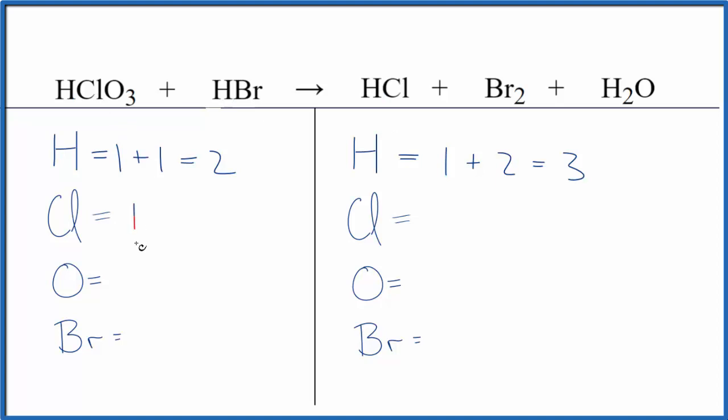We have one chlorine here, and over here we have one chlorine, three oxygens, just the one oxygen here, and bromine here, two in the products. So these are the atoms.